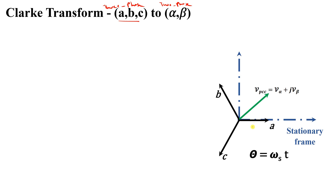You will draw this figure where we have A, B, and C shifted by 120 degrees from each other. We assume a two-phase system alpha and beta with a 90-degree angle between them. Alpha will be aligned on phase A, and beta will be at 90 degrees from it.